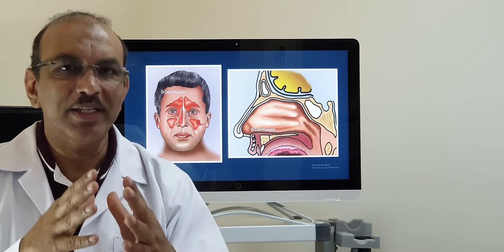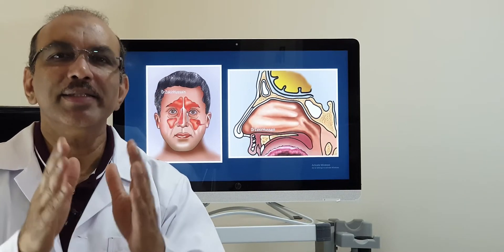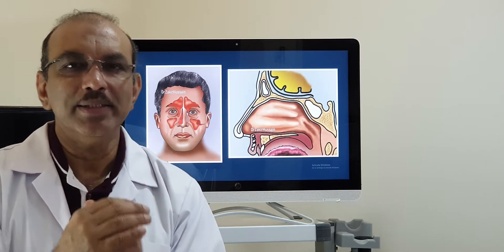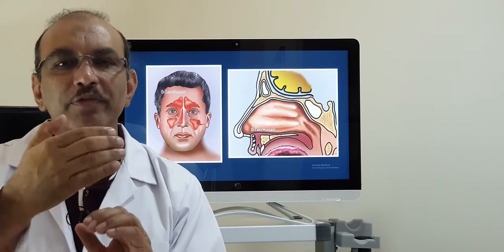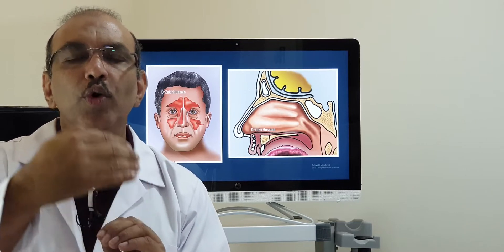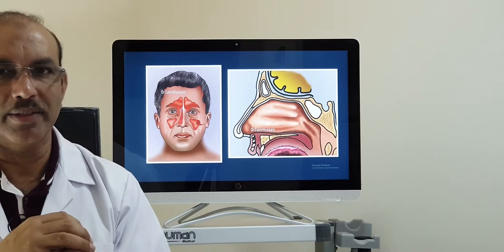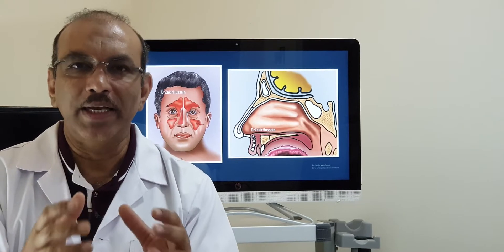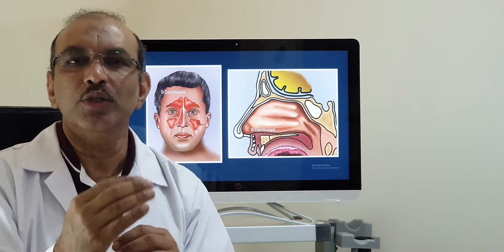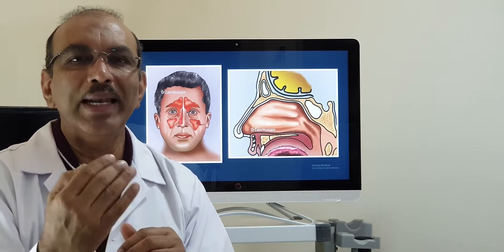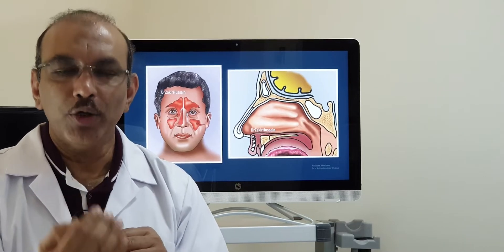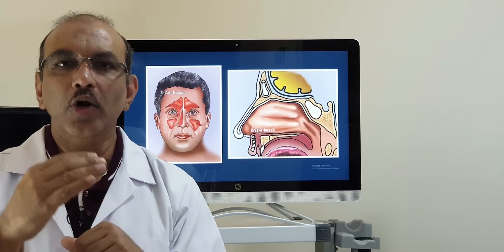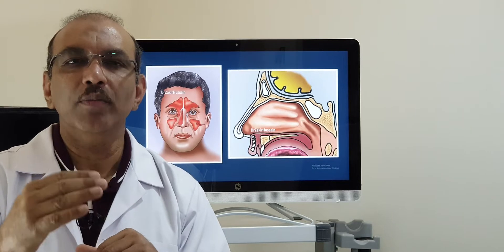When you have infection of the sinus, that is sinusitis. If the duration is less than 3 months it is acute sinusitis, and if the duration is more than 3 months it is chronic sinusitis. Some doctors or scientists say acute sinusitis is 1 month, but the latest terminology is acute sinusitis means infection less than 3 months, and chronic being infection more than 3 months.